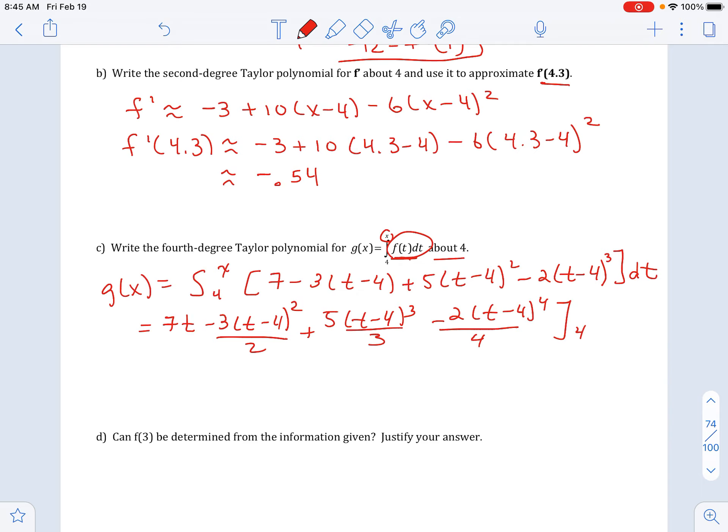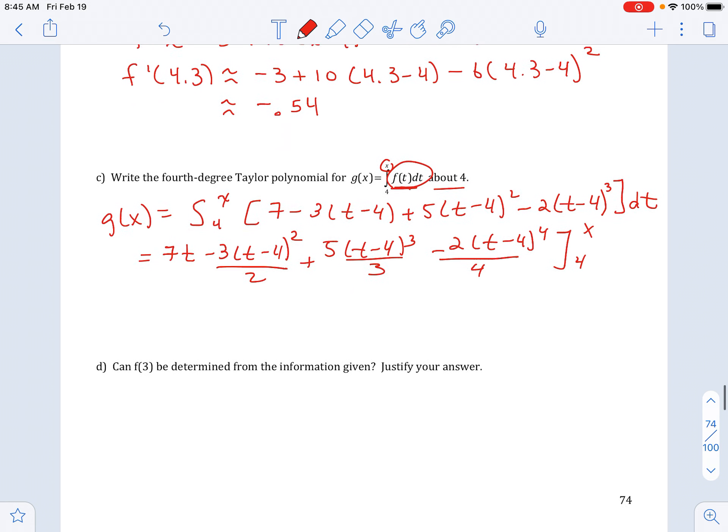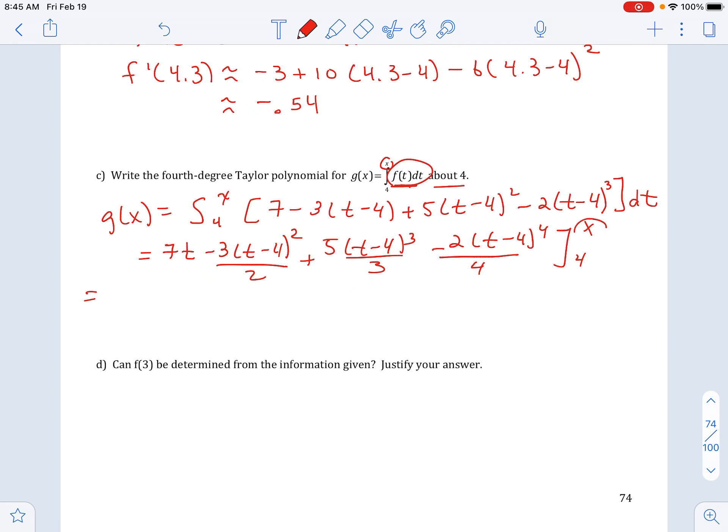And my bounds are 4 and x. So let's go ahead and now plug in my bounds. So I start by plugging in the upper bound. So all that happens is all the t's get replaced with x's.